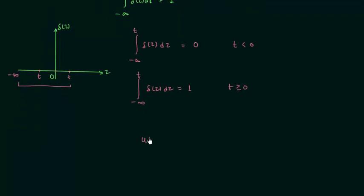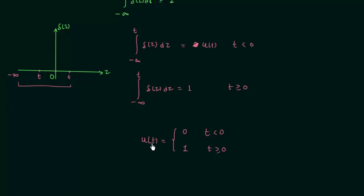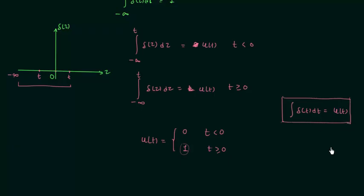From the definition of unit step signal, u(t) is equal to 0 when time t is less than 0, and it is equal to 1 when time t is greater than 0. We also make the assumption that u(t) is equal to 1 when t is equal to 0. So in this result we can replace 0 by u(t), because when t is less than 0, u(t) is 0, and when t is greater than or equal to 0, u(t) is 1. So if we integrate the unit impulse signal we will have the unit step signal. This is the relation between unit impulse signal and unit step signal.